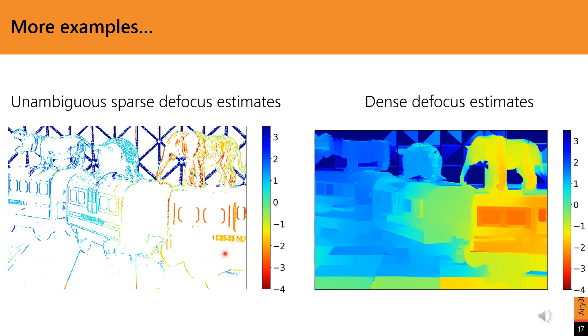And here are the final sparse and dense defocus maps. Note that the defocus estimates for the train and the figurines are increasing from right to left, again in trend with the depth.